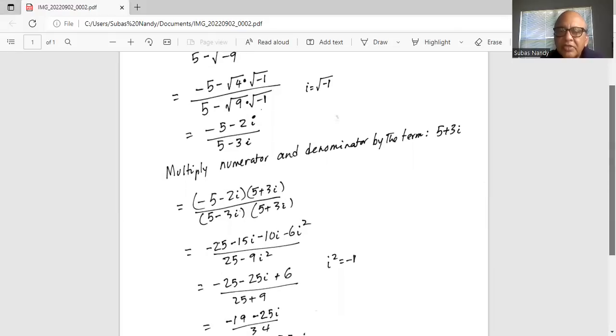Then we will FOIL it out in the numerator. That is, we multiply the first terms first. So minus 5 times 5 is minus 25. Next one is outside term. So minus 5 times 3i, which is minus 15i. Then inside term, which is minus 2i times 5, which is minus 10i. And then the last term, which is minus 2i times 3i, which is minus 6i squared.